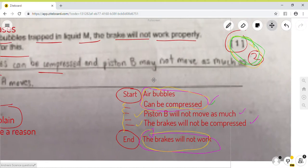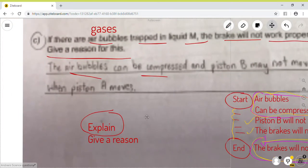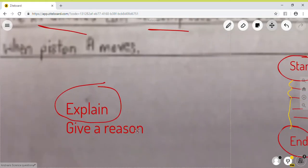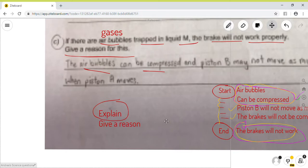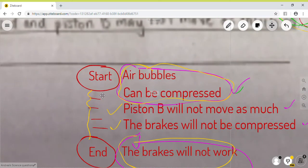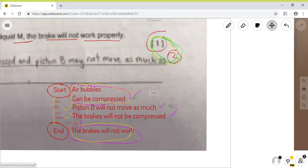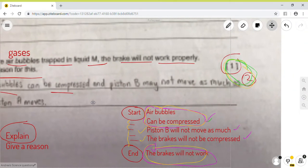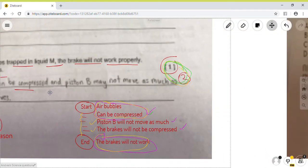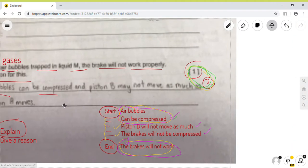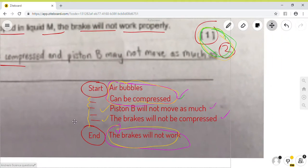So, you have to try to link the start to the end. Yeah. Every time you see this, either explain or give a reason. Every time you are asked to explain or give a reason, you can use this technique called the start-end technique. So, the start in this case is air bubble and how the brakes will not work because there are air bubbles inside and you try to link in between.